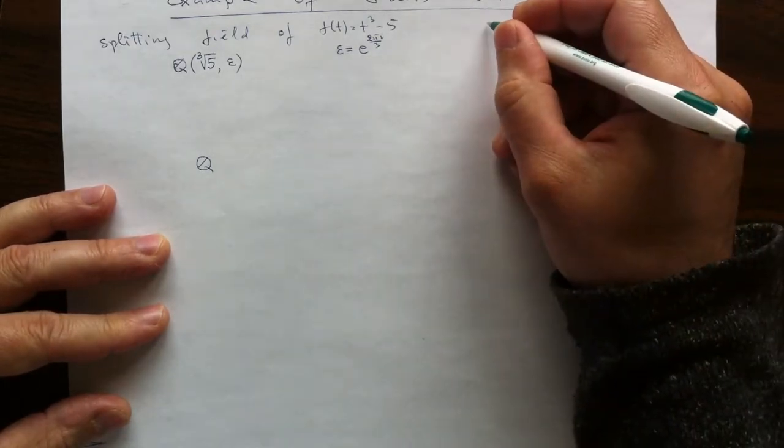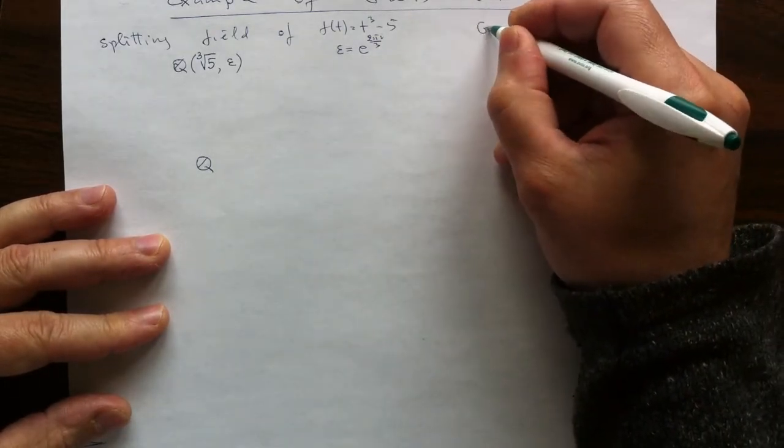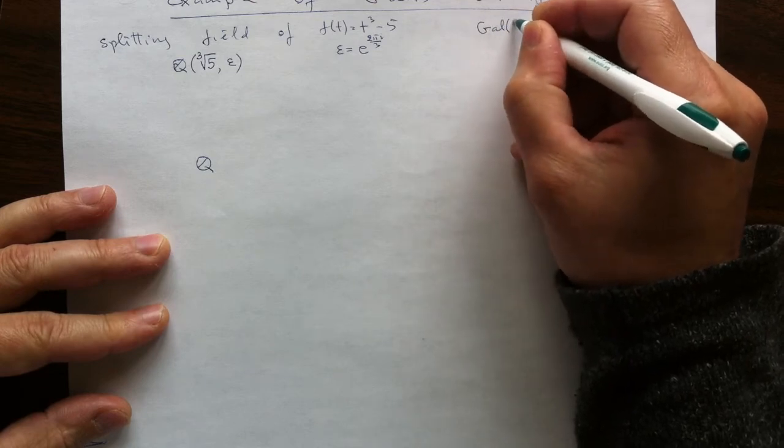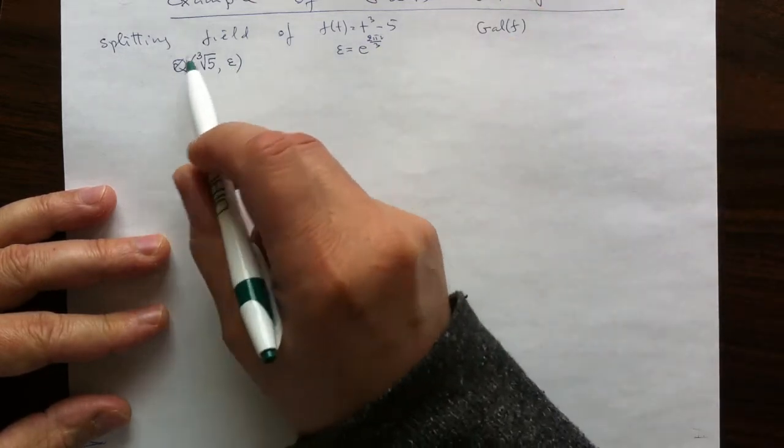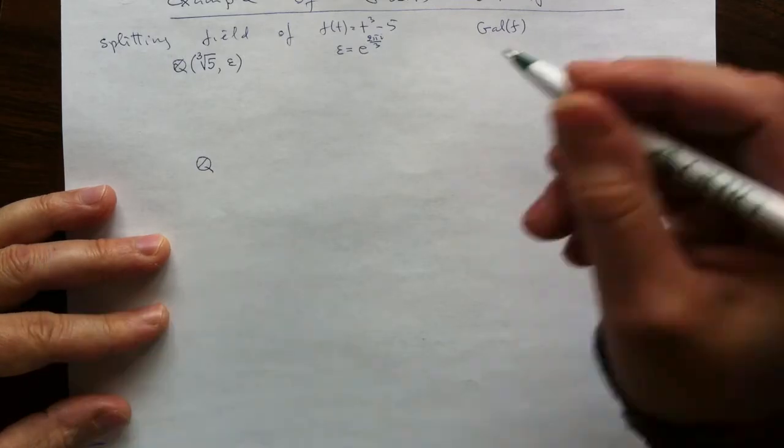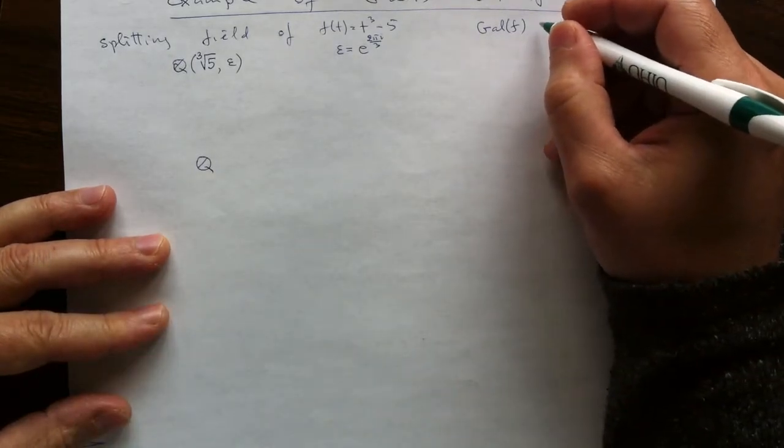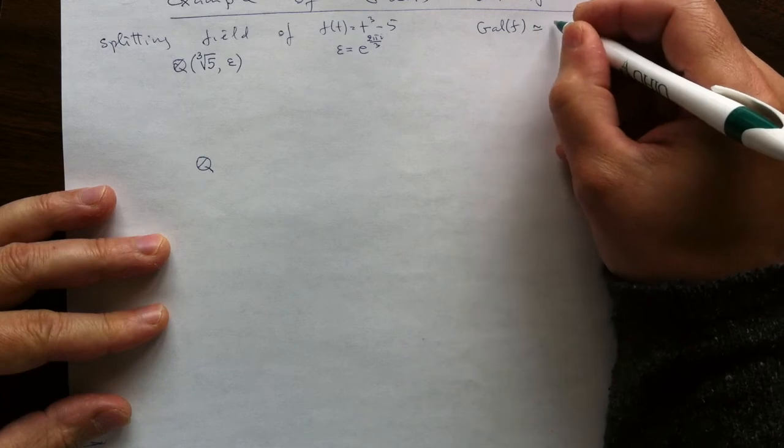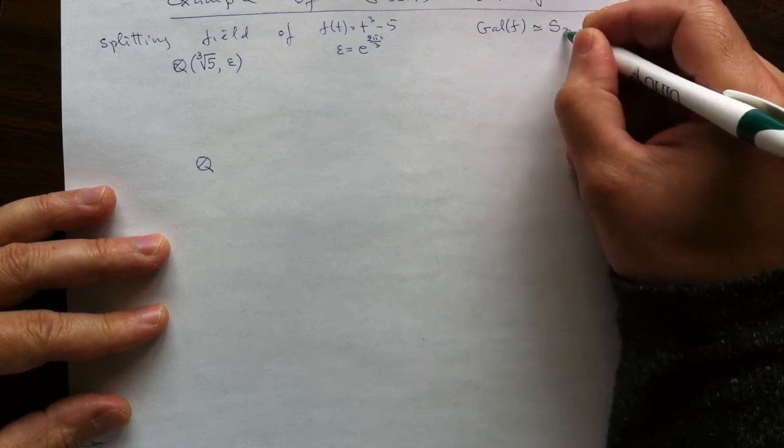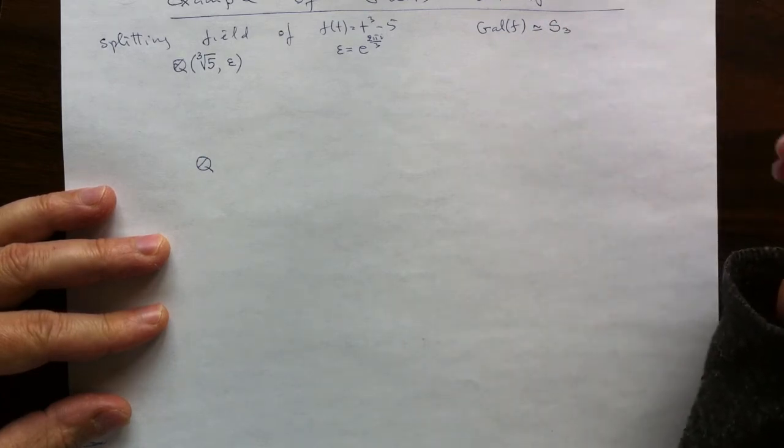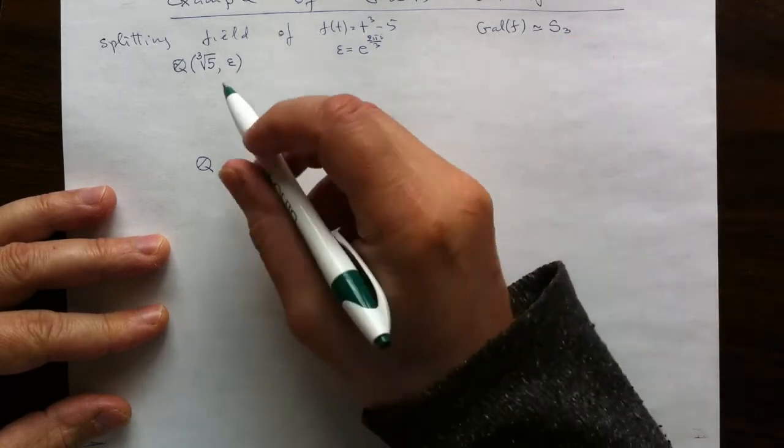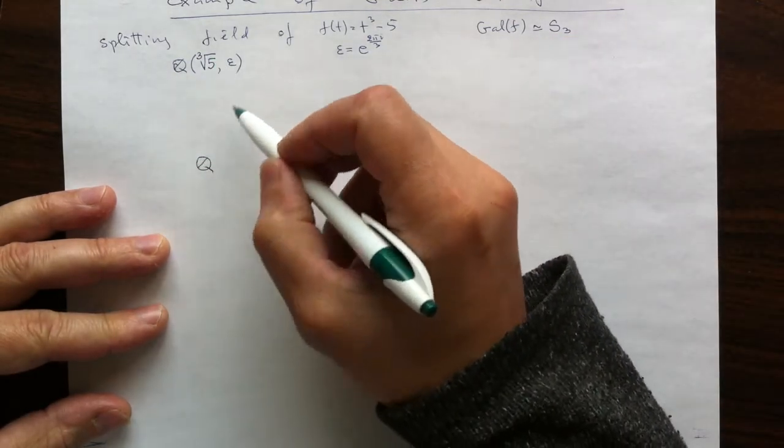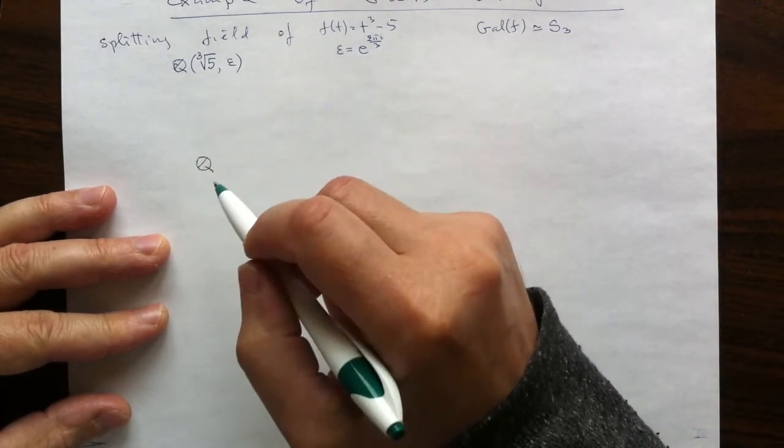And for using Galois correspondence we need to know what is the Galois group of this polynomial, what is the group of symmetries of this field. And it is the symmetric group S3, the full symmetry group, because we looked at the symmetries of a similar example, say instead of 5 we took 2.